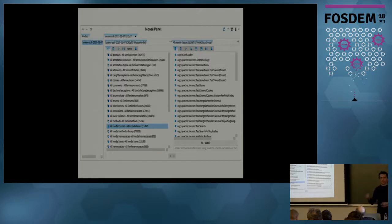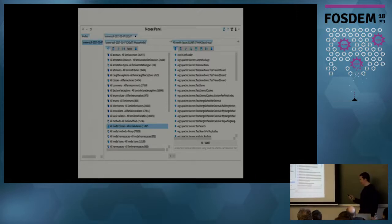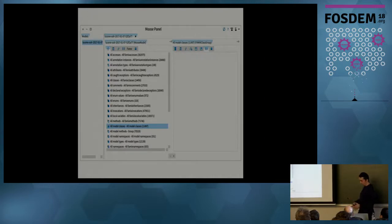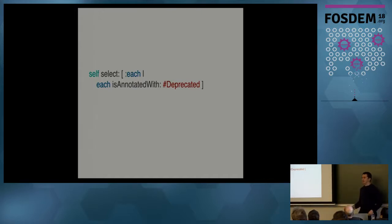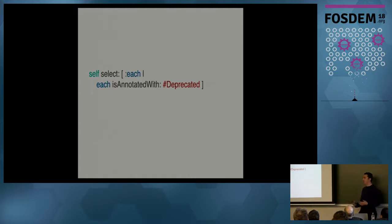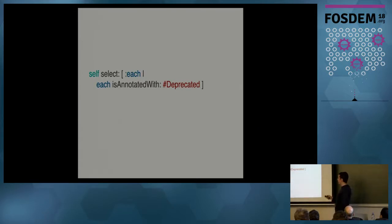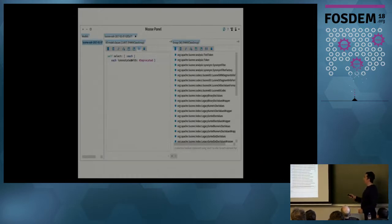Here we have a list of 12,000 classes. To find the deprecated ones, I definitely don't want to scroll. Instead, we have another pane where we can write a query against the loaded data. So I write a query — the syntax is in Pharo, the programming language on which Moose is built. It's an open source, object-oriented programming language. We say self — the current list of classes — and select only those classes that are annotated with deprecated. If we run this, in a new pane to the right we get the list of deprecated classes. There are 36 deprecated classes.